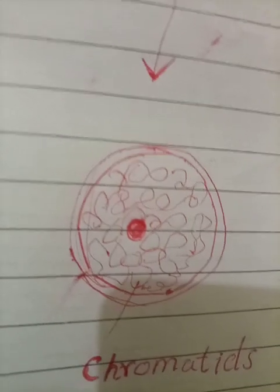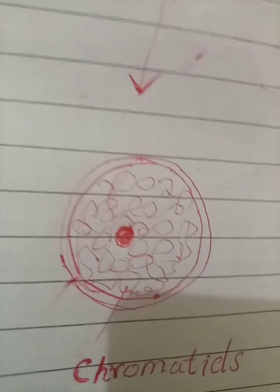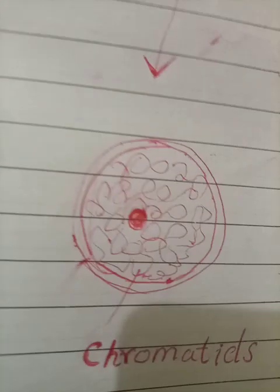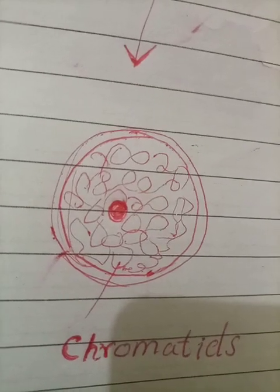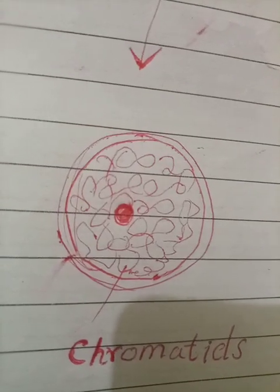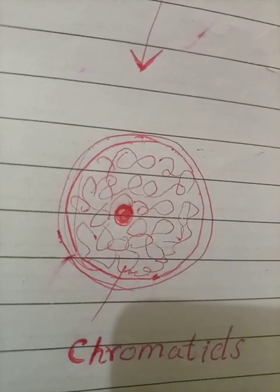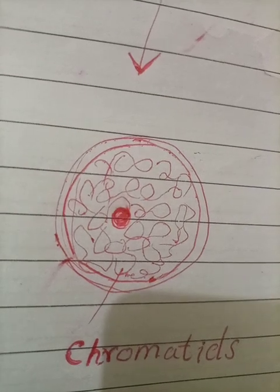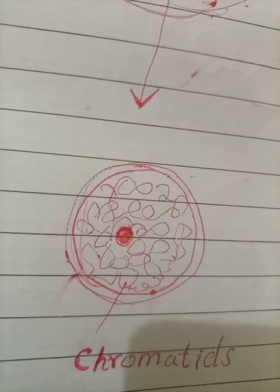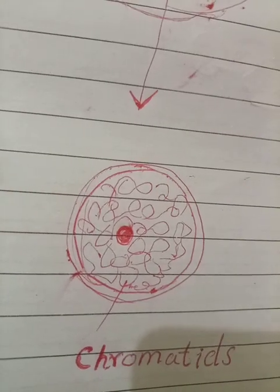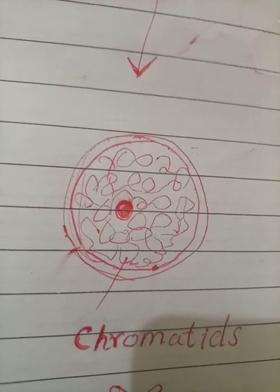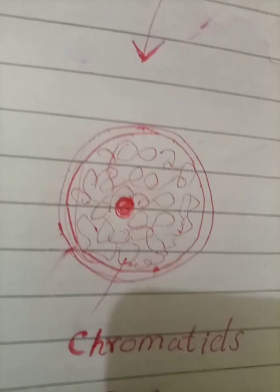Now for cell division — if we have a ball of threads that are intertwined, we cannot easily divide them into two equal parts. One part might have more thread and the other less. So what do we do? These threads must coil or condense, just like a phone wire.